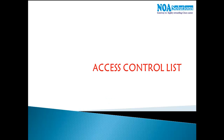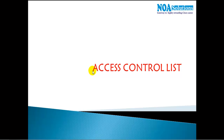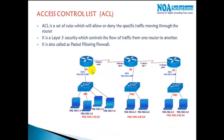In this section we'll see how to configure Access Control Lists, what they are exactly, and what they do. We'll also cover different types of ACLs with some basic theory. An access control list is a set of rules which will allow or deny traffic moving through the router.